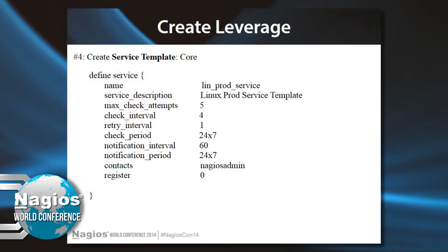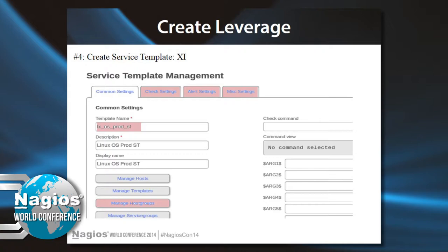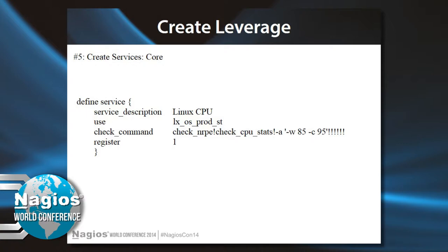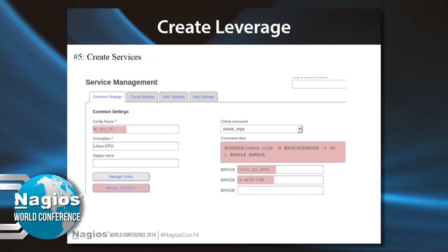Service template — here's one for Linux production services. Those are the settings that will be inherited for all of those Linux production services in Core, and in XI it's the same thing. You set up your check settings, alert settings, and miscellaneous settings in the template, not in the specific service. Notice that it's tied to a host group. The services use a service template, which determines the check interval and who gets notified. In XI, your service defines the service, ties to a template, and the template is tied to a host group.